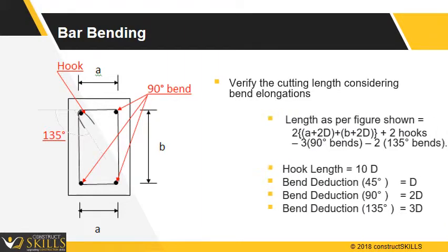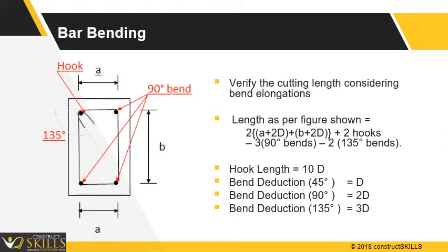The equation to find out the cutting length of a bending bar is: 2×A + 2×(diameter of stirrups bar) + B + 2×(diameter of stirrups bar) + 2 numbers of hooks − 3 numbers of 90-degree bends − 2 numbers of 135-degree bends.